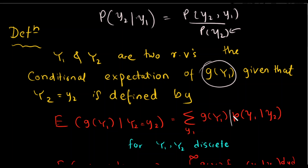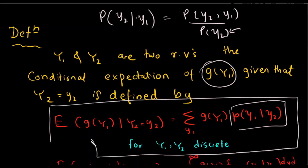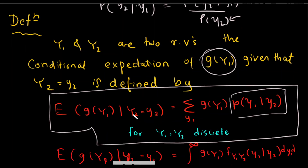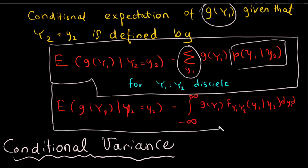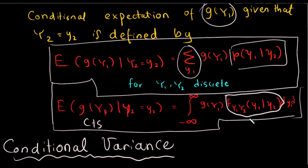The method we have used is based on conditional probability distribution using discrete random variables. If we want to consider the continuous case, the summation becomes an integration part. We have a conditional probability distribution function and a conditional probability density function for continuous random variables.